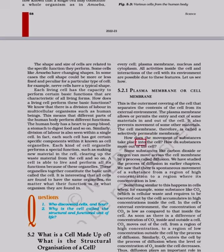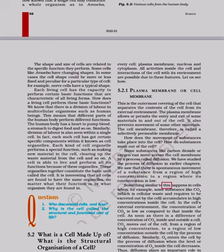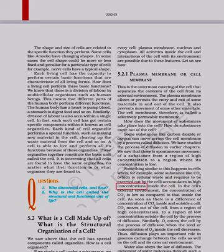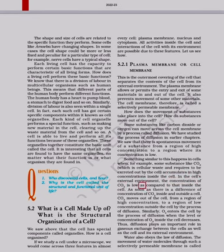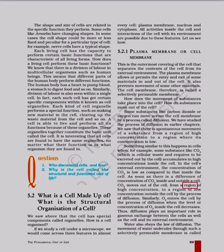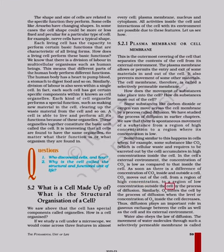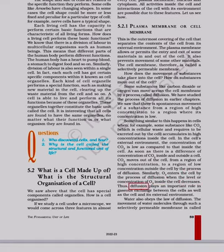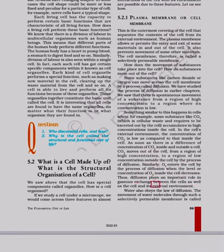How does the movement of substances take place into the cell? How do substances move out of the cell? Some substances like carbon dioxide or oxygen can move across the cell membrane by a process called diffusion. There is spontaneous movement of a substance from a region of high concentration to a region where its concentration is low. When CO2, which is cellular waste and requires to be excreted out by the cell, accumulates in high concentrations inside the cell, and the concentration of CO2 is low outside, CO2 moves out of the cell from a region of high concentration to a region of low concentration outside the cell by the process of diffusion. Similarly, O2 enters the cell by the process of diffusion when the level of O2 inside the cell decreases. Thus, diffusion plays an important role in gaseous exchange between cells as well as between the cell and its external environment.